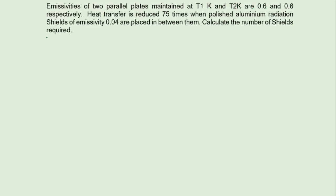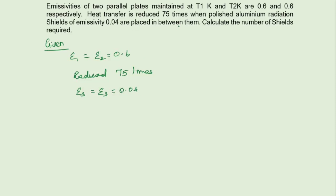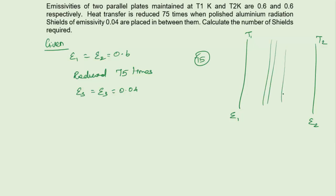Now for the next problem: emissivities of two large parallel plates maintained at T1 and T2 are epsilon_1 = epsilon_2 = 0.6. The heat transfer is to be reduced 75 times by introducing n number of radiation shields, each with emissivity epsilon_s = epsilon_3 = 0.04, between the two plates. We need to calculate the number of shields required.